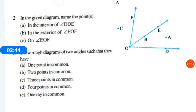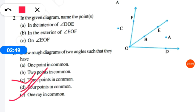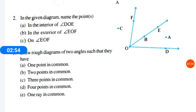Next conditions are three points, four points, and one ray in common. You can try these on your own. If you cannot, I will explain them in the next lecture. So today's session is enough; we will continue in the next lecture.